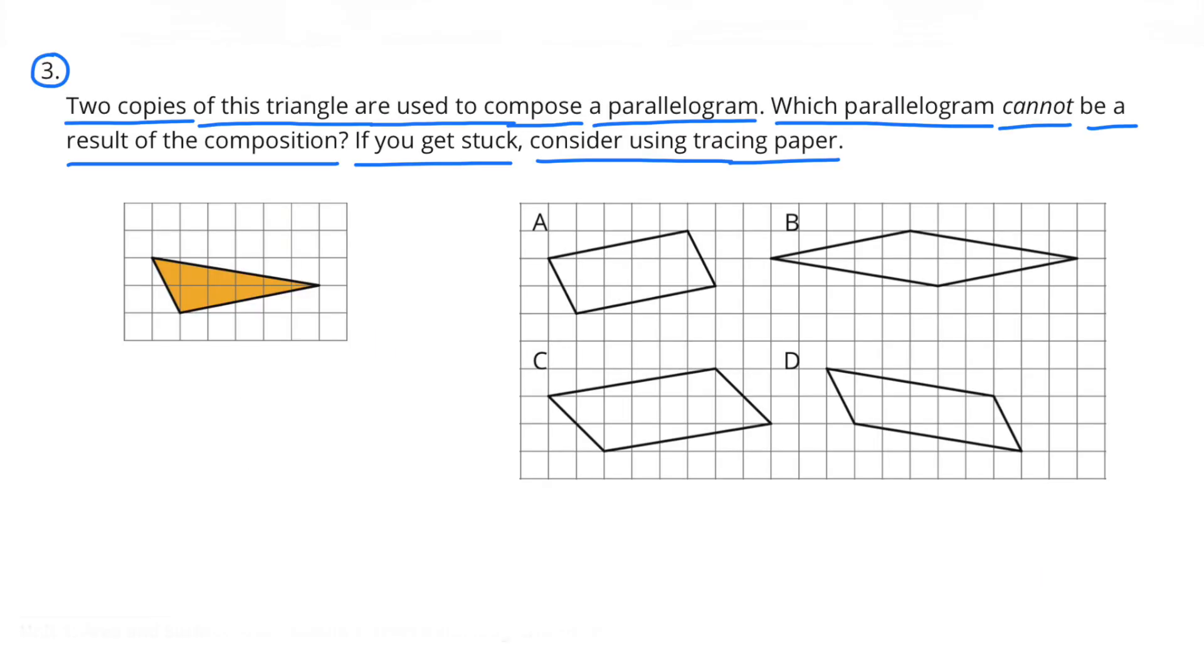Number 3. Two copies of this triangle are used to compose a parallelogram. Which parallelogram cannot be a result of the composition? If you get stuck, consider using tracing paper.